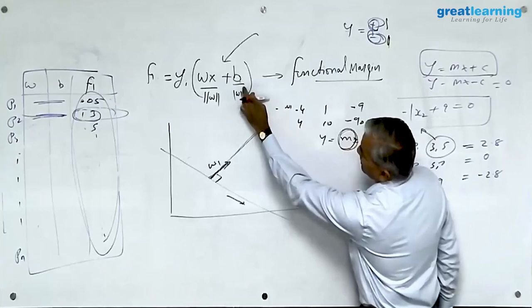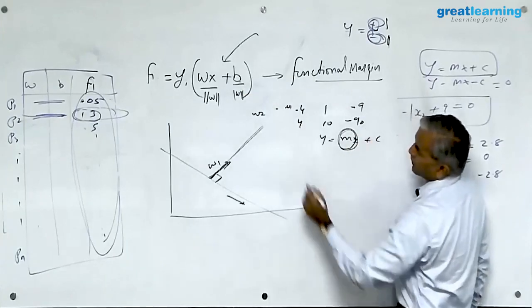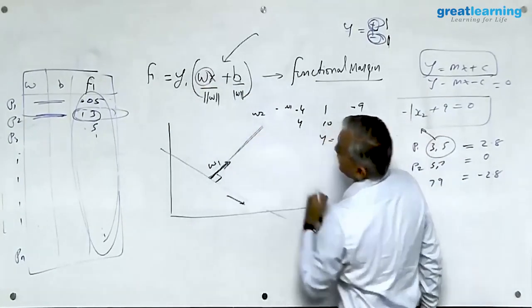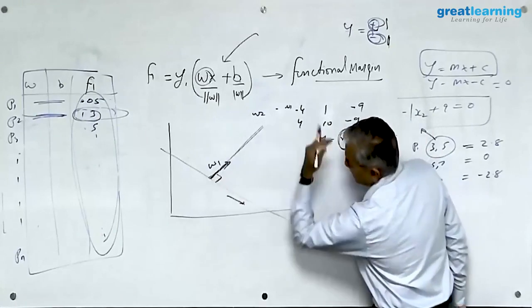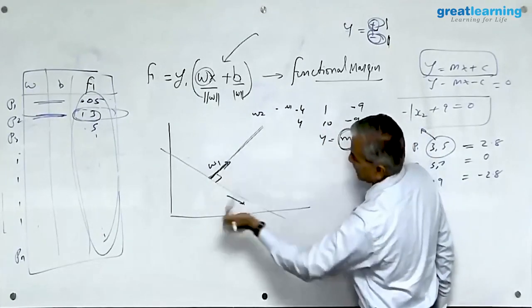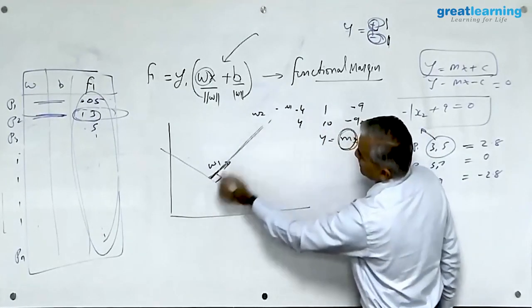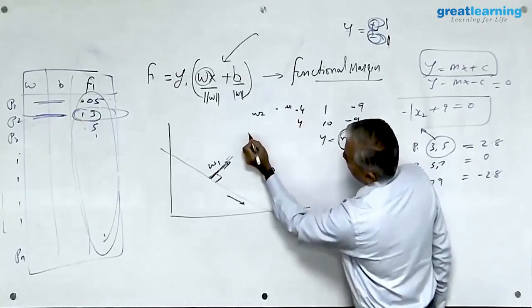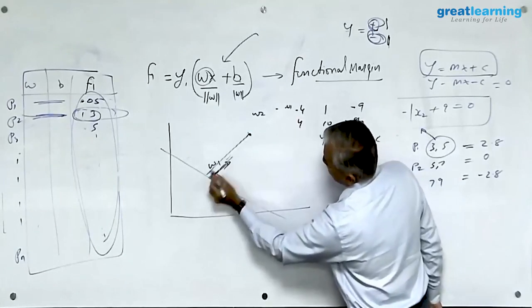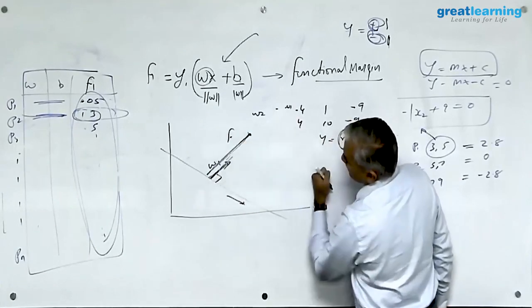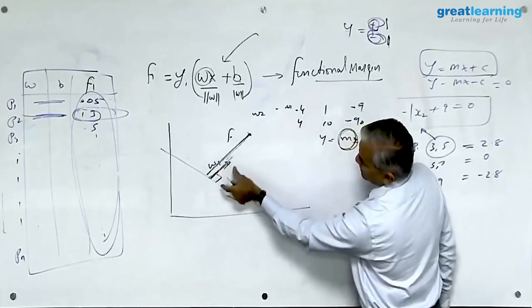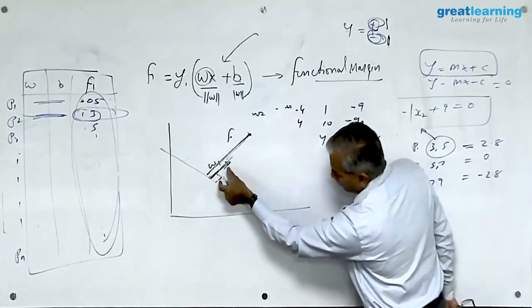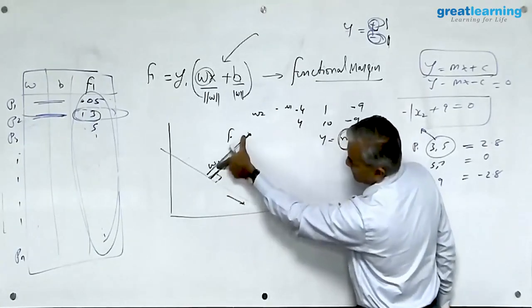In functional margin the problem is when you're using this w terms, same equation can be again and again evaluated to find the maximum distance and all the distance between data points. What we do is any data point, the distance between the point and the data point which is called functional margin, this functional margin is expressed in terms of how much w is there inside this.